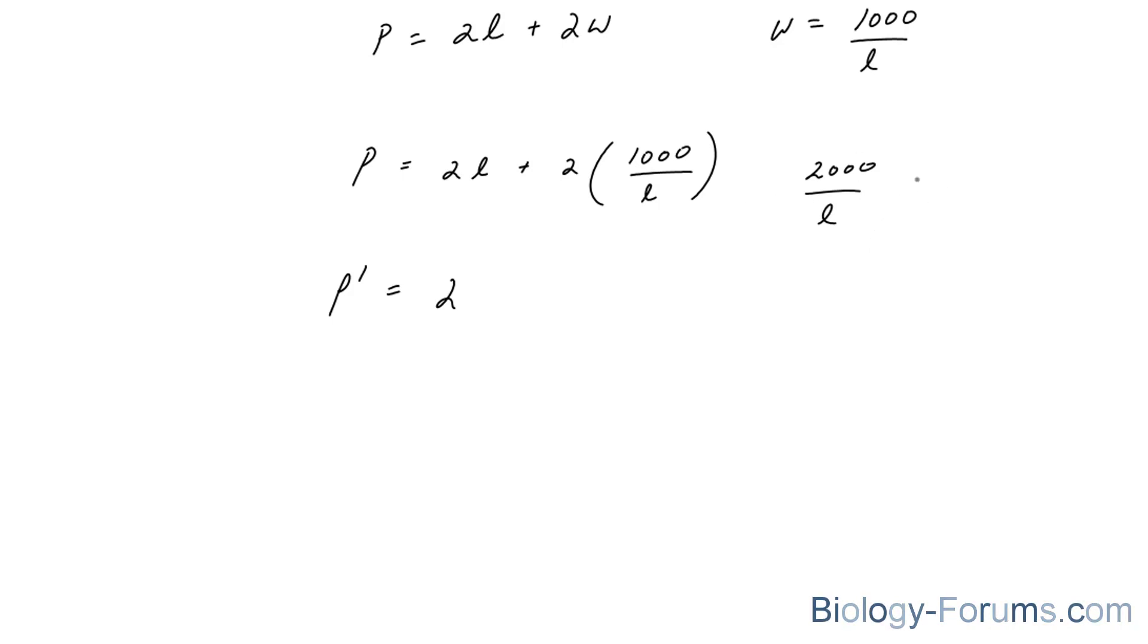And remember, 2,000 over L is the same thing as 2,000 times L to the power of negative 1. So I'll use the power rule for this. And if I do that, I end up with negative 2,000 L to the power of negative 2. And the reason why is because in the power rule, you take this number down,